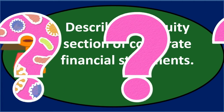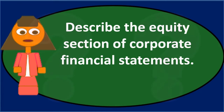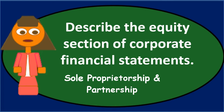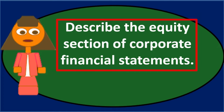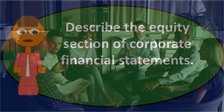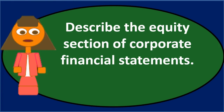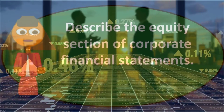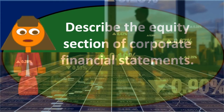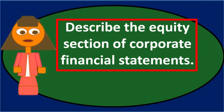What differs between a sole proprietorship, partnership, and corporation? For a sole proprietorship and partnership, ownership is broken out by capital accounts, which can differ per partner. For a corporation, we don't list all the individual owners. A corporation can have many stockholders, but we don't list each individual owner — that's the beauty of the corporate structure.